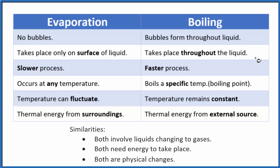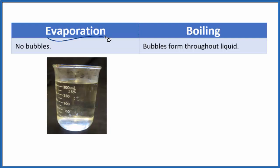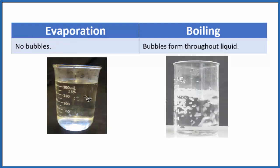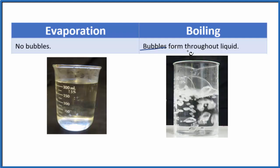Let's start off with the obvious. For evaporation, there aren't bubbles. We just have a beaker of water here, it's evaporating, but we really don't see much happening, there aren't any bubbles. For boiling though, there are bubbles and they form throughout the liquid.